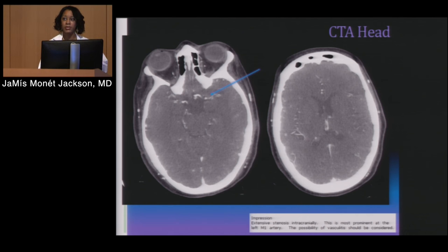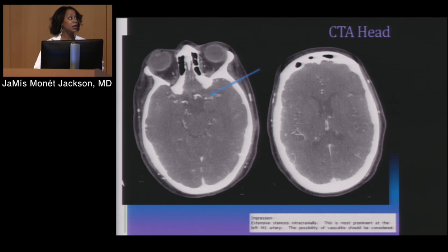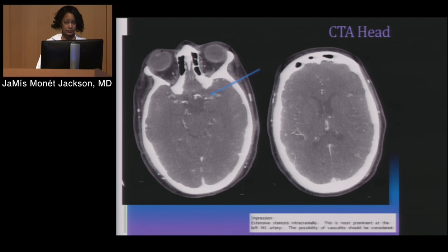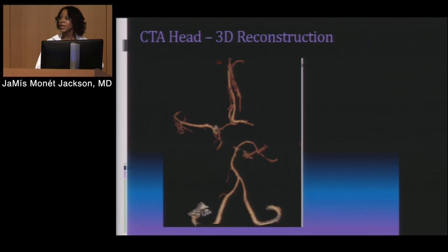Her vessels, for her age — and she's only a couple of years older than me — are very small and broken up. When you see a CTA, you should see the flow go through all those vessels cleanly. Unfortunately, in this patient, we don't see that.